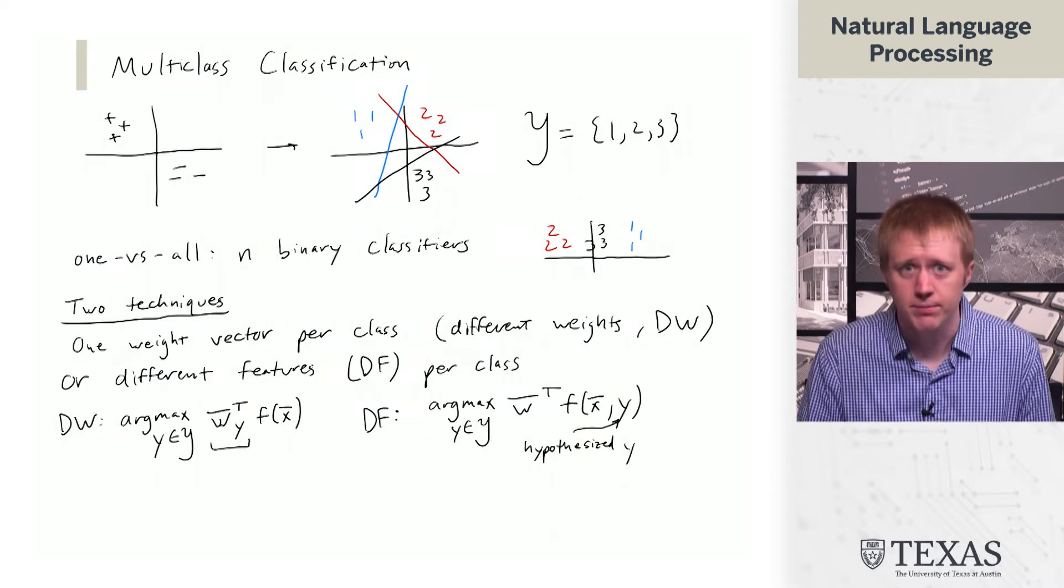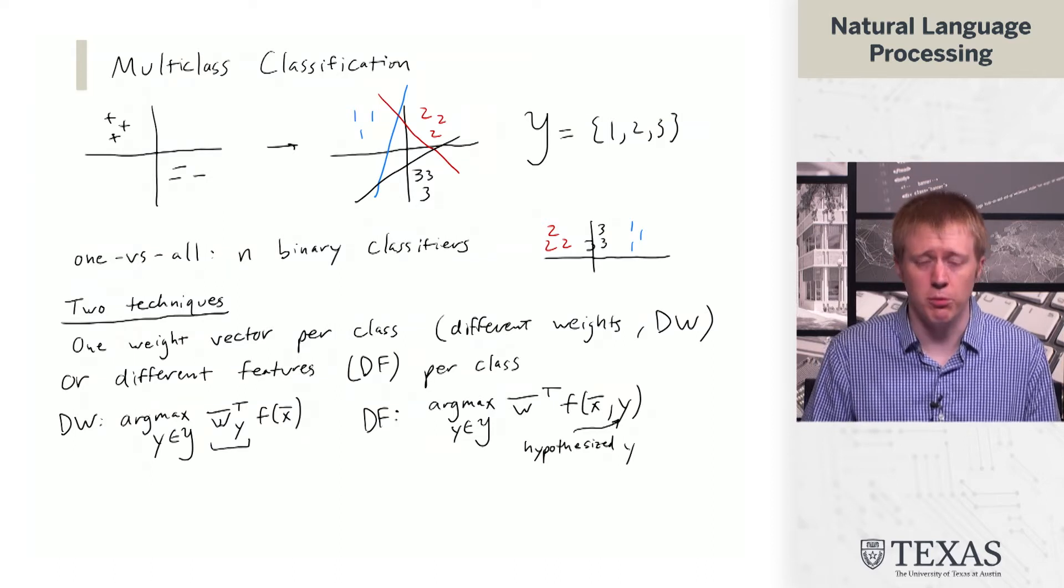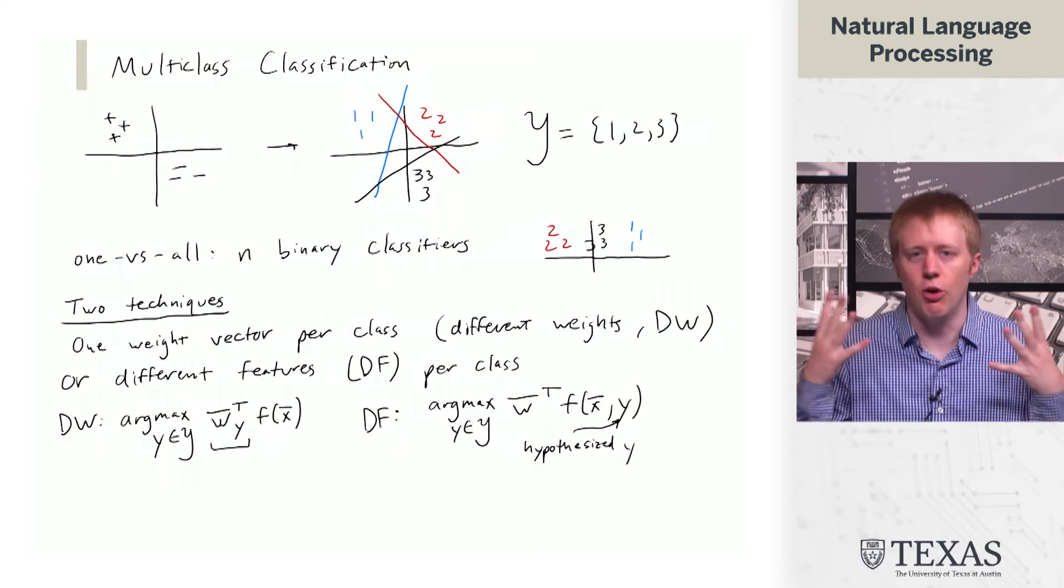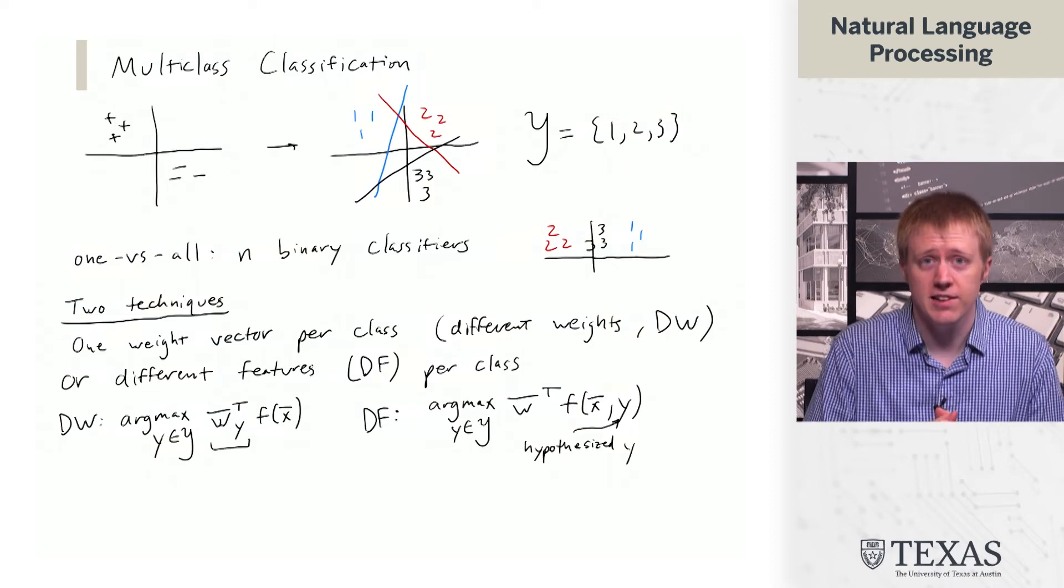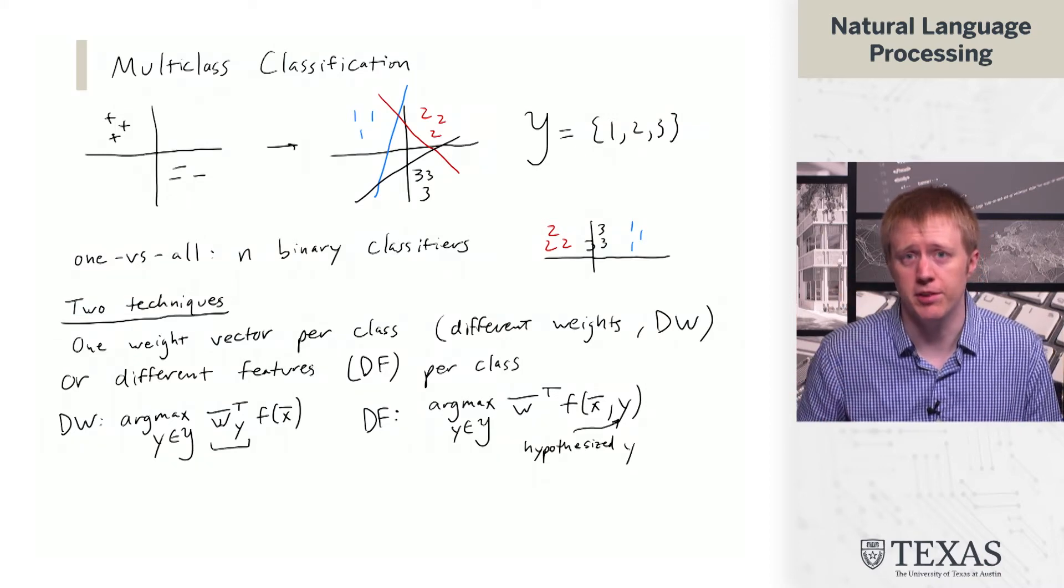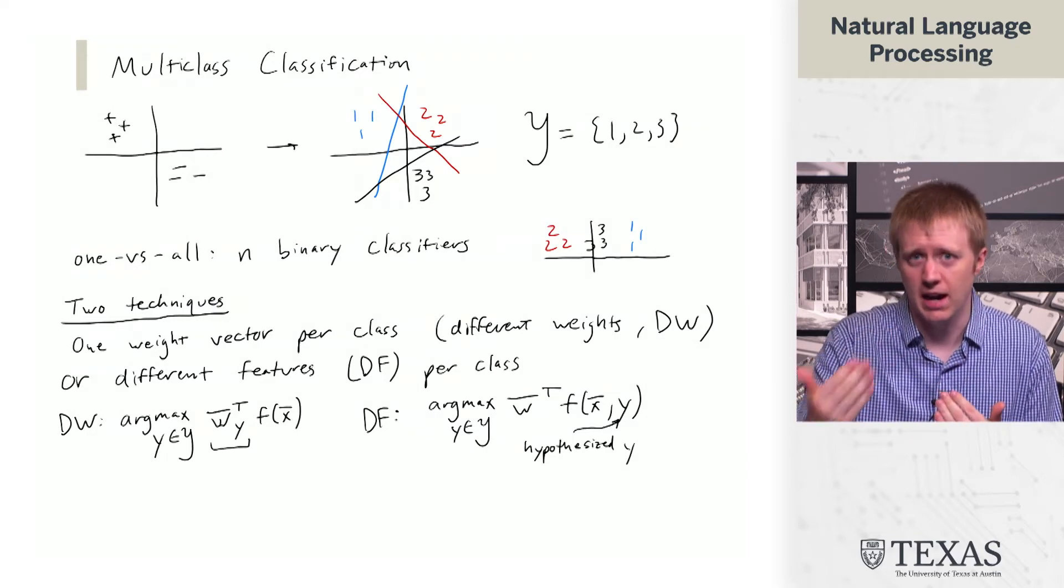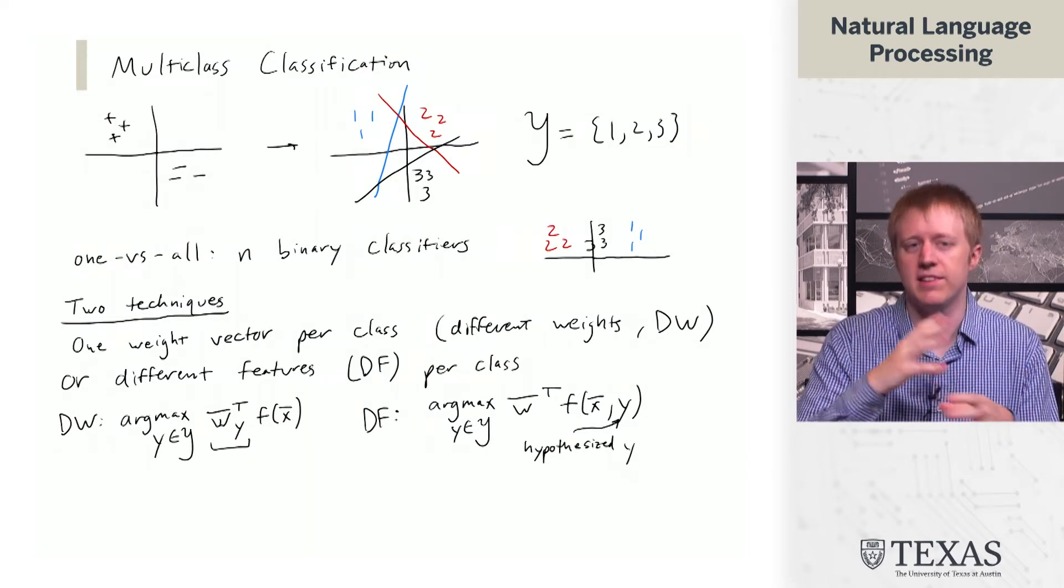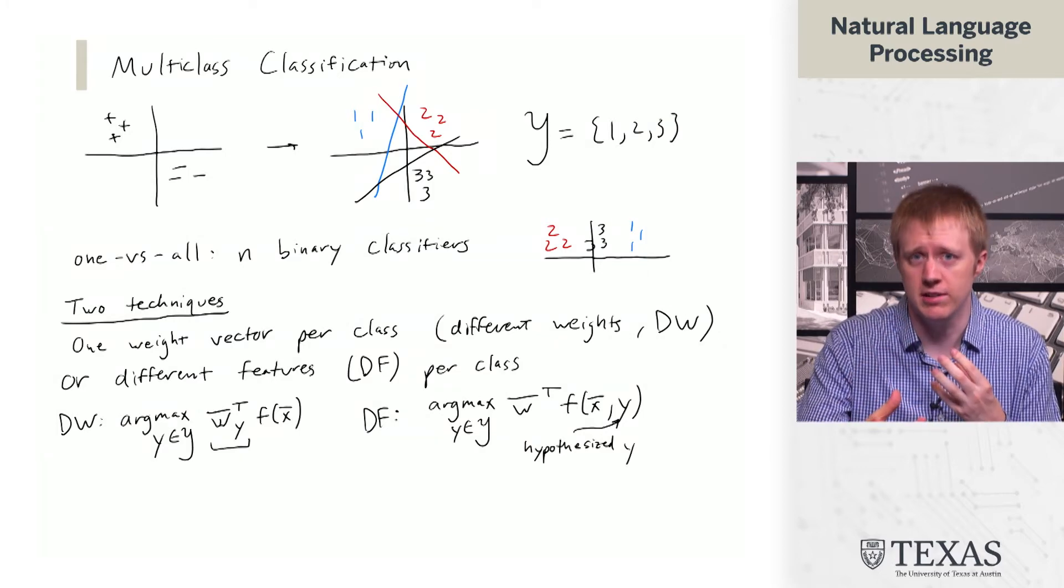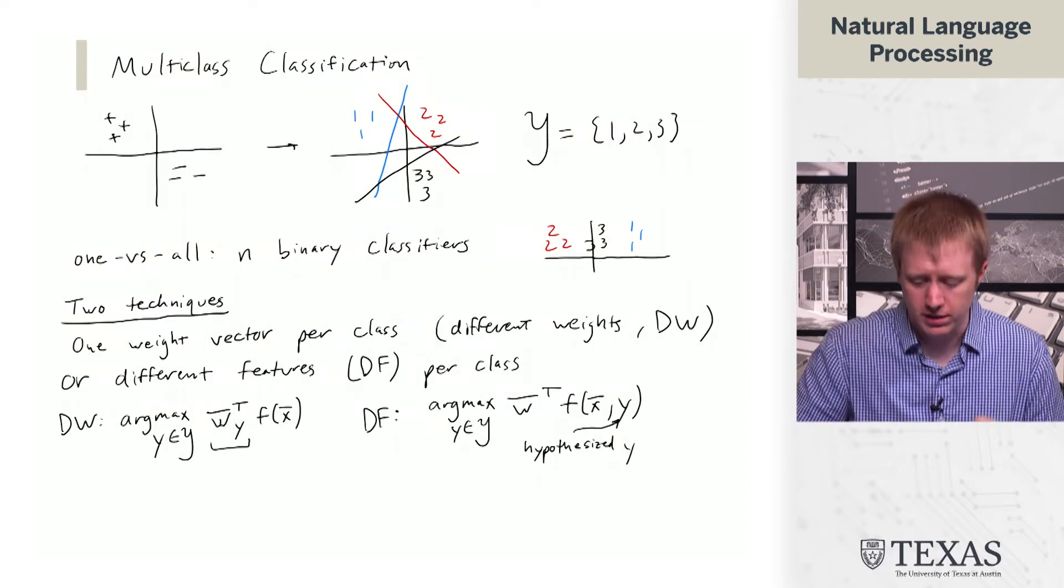The thing I want to emphasize is that this y in here is what we think of as a hypothesized y. It's not the case that we're cheating and looking at the gold classification decision. Instead what we're doing is scrolling through all of the possible labels we can have and saying which one of these actually instantiates features with each possible label, and then give me the score when I take the dot product.